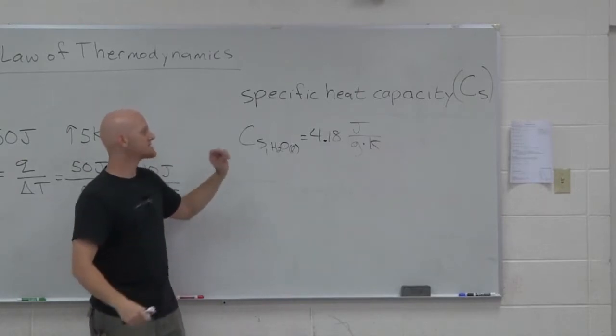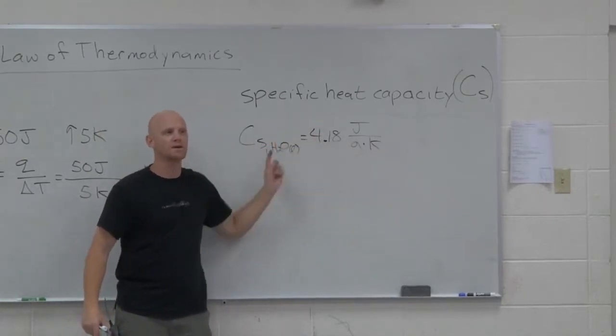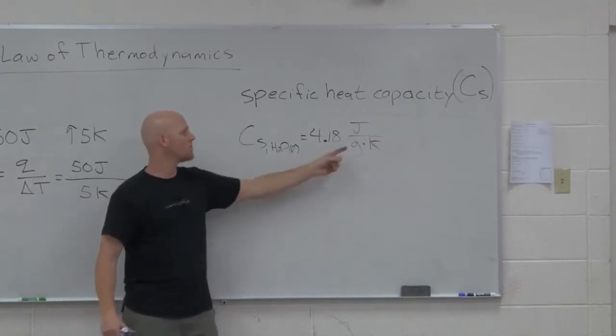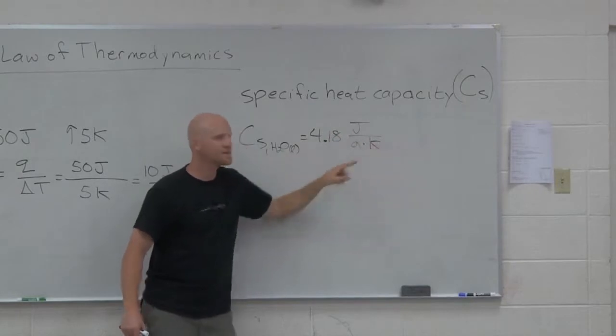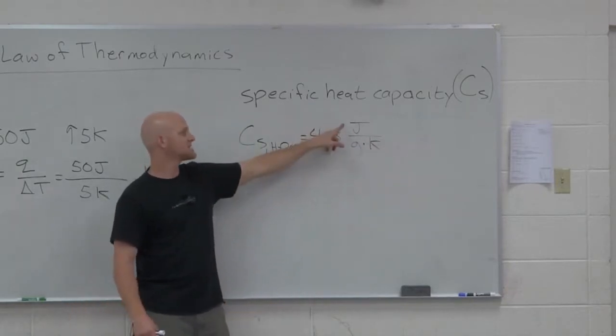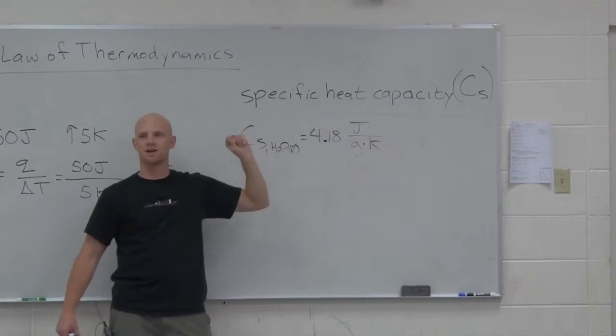And so this thing is scaled. It's scaled to one gram of water. For every gram of water, it takes 4.18 joules to cause a one kelvin temperature change. It's this many joules per 1 gram per 1 kelvin temperature change.